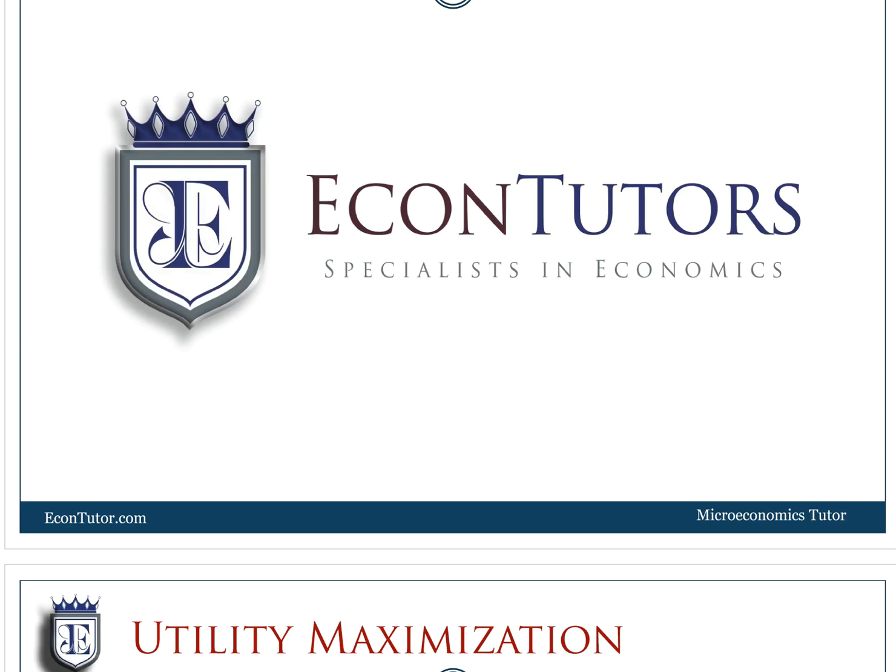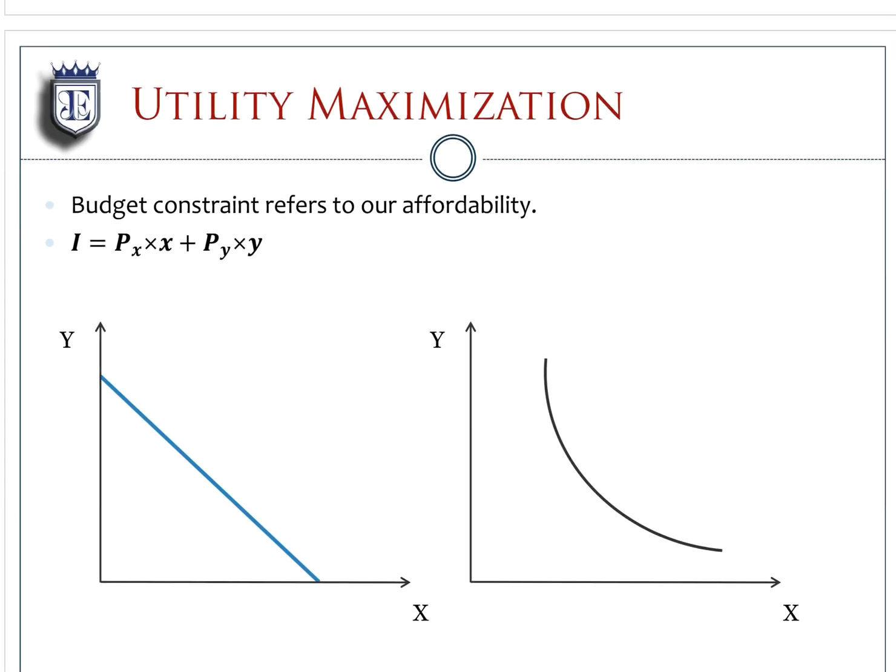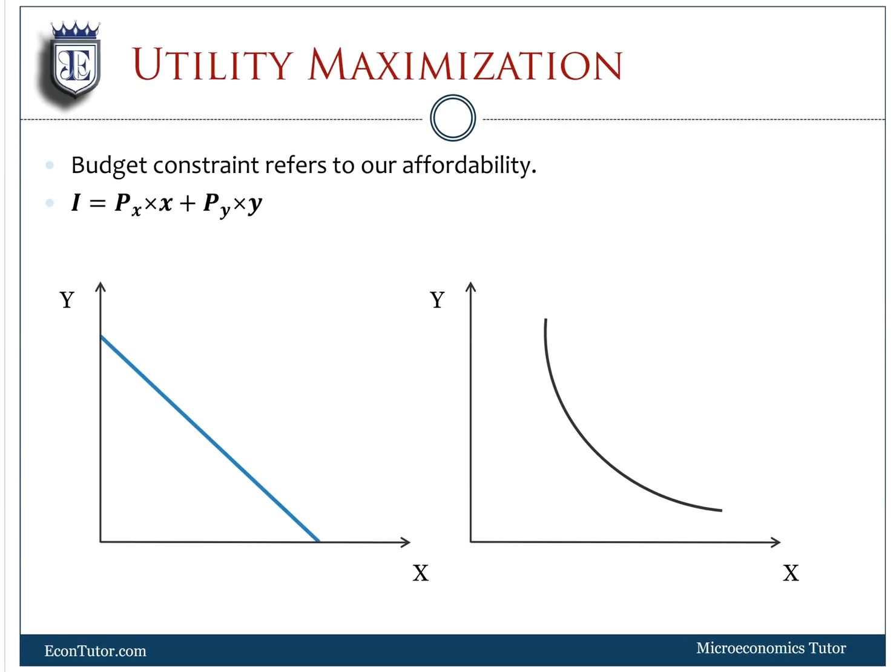Hi guys, this is our tutorial on utility maximization. This brings together what we've been doing for the last couple of tutorials about budget constraints and indifference curves. We know that our budget constraint has a slope of negative Px over Py.